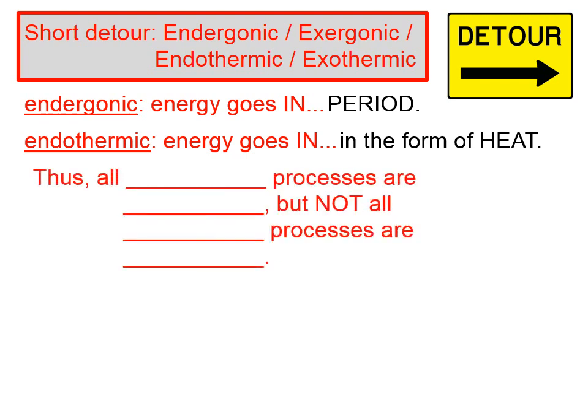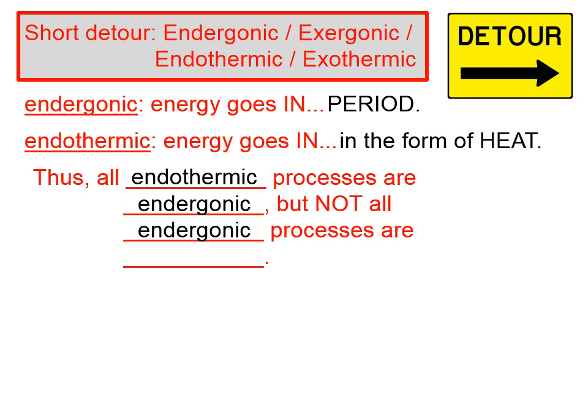In other words, any time any type of energy is put in, that is an endergonic process. Therefore, endothermic processes — when heat goes in — are also endergonic processes. But not all endergonic processes are endothermic.